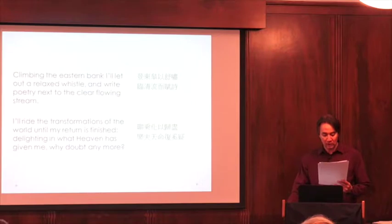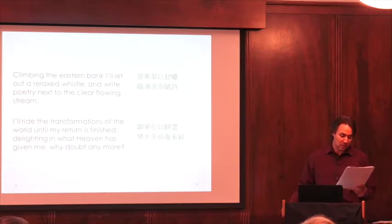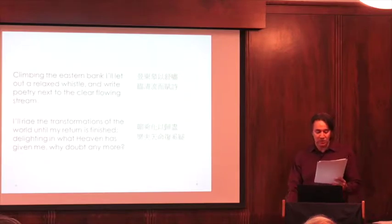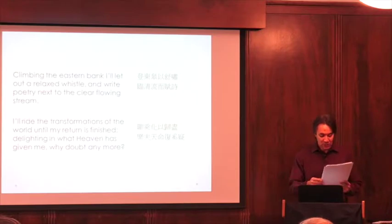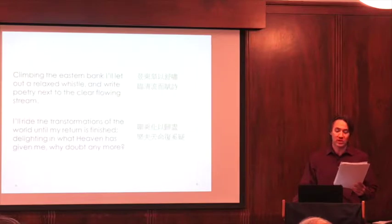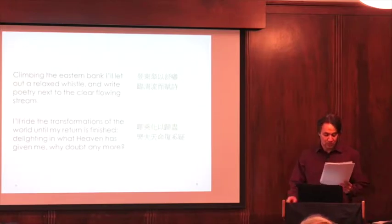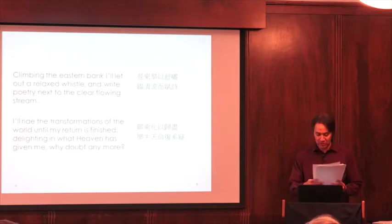So the poem mentions several relevant themes, including talk of the author's natural dispositions discussed in terms of ziran, the inevitability of change discussed in terms of hua, and the author's relationship with the changes or transformations of the world he inhabits. This presentation will argue that Tao recognized a tension between being himself and the natural transformations of the world. While he advocated a kind of naturalism or ziran zhuyi, he did not believe that he, or human beings in general, were predisposed to accept the inevitable changes of the world.